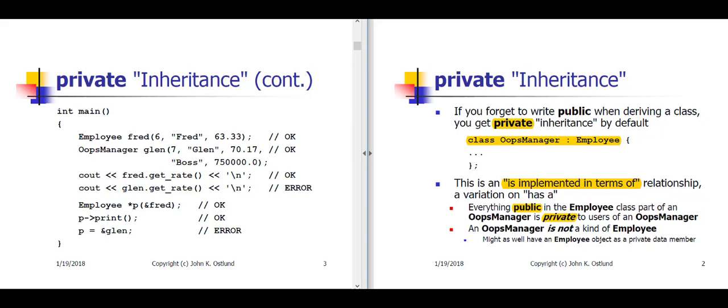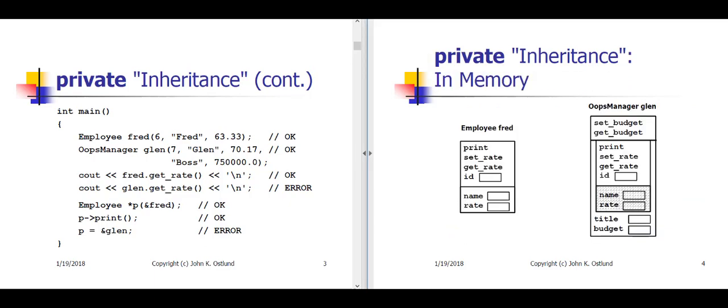Here on slide three, we have an example program using the employee class and the oopsManager class. We're saying that Fred is an employee object, initialized with an ID of 6, a name of Fred, and a rate of 63.33. Next, we declare an oopsManager object called Glenn, with a constructor that passes seven, Glenn, and 70.17 down to the base class constructor. OopsManager also has a title of 'boss' and a budget of three quarters of a million dollars.